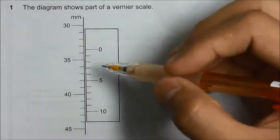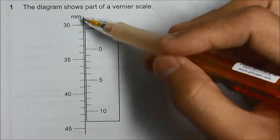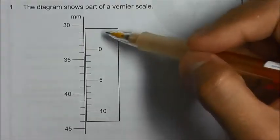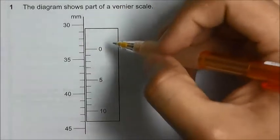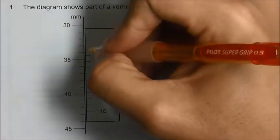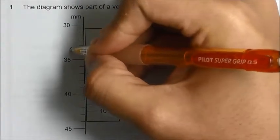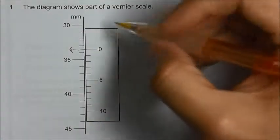We have a vernier caliper here. On the left we have the main scale, and on the right we have the vernier scale. How do we read it? We go to the zero on the vernier scale and draw a dotted line here. This is the point that we are trying to read. First,